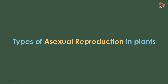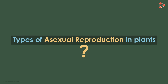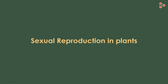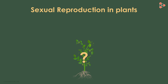Till now, we have discussed and learned the different types of asexual reproduction in plants. But is there any other method of reproduction adopted by plants? Yes there is. We know that some plants are capable of sexual reproduction as well. Do plants possess any special features for this? Yes they do.